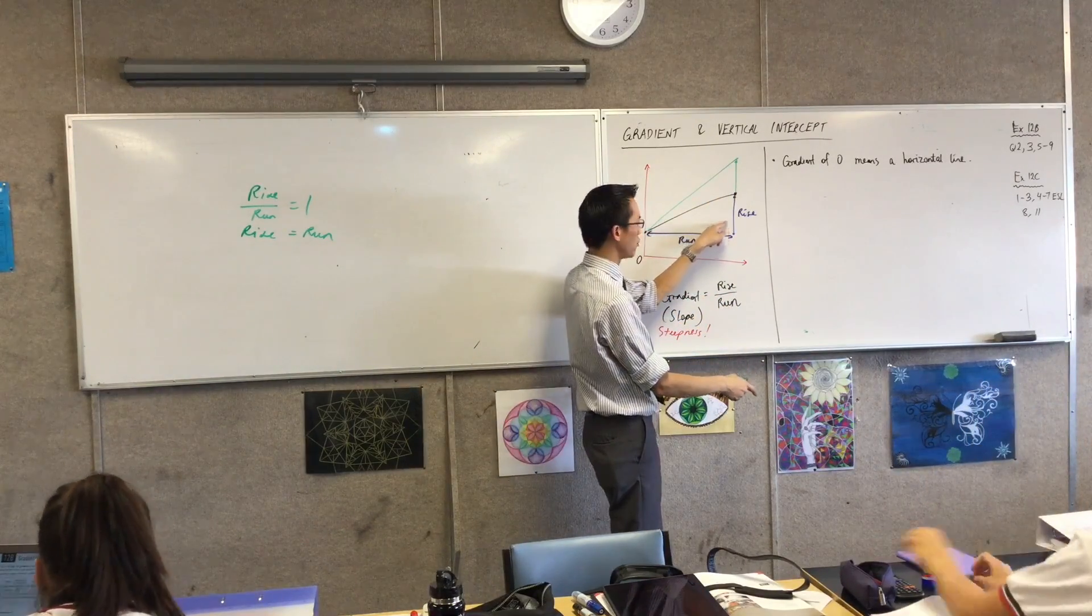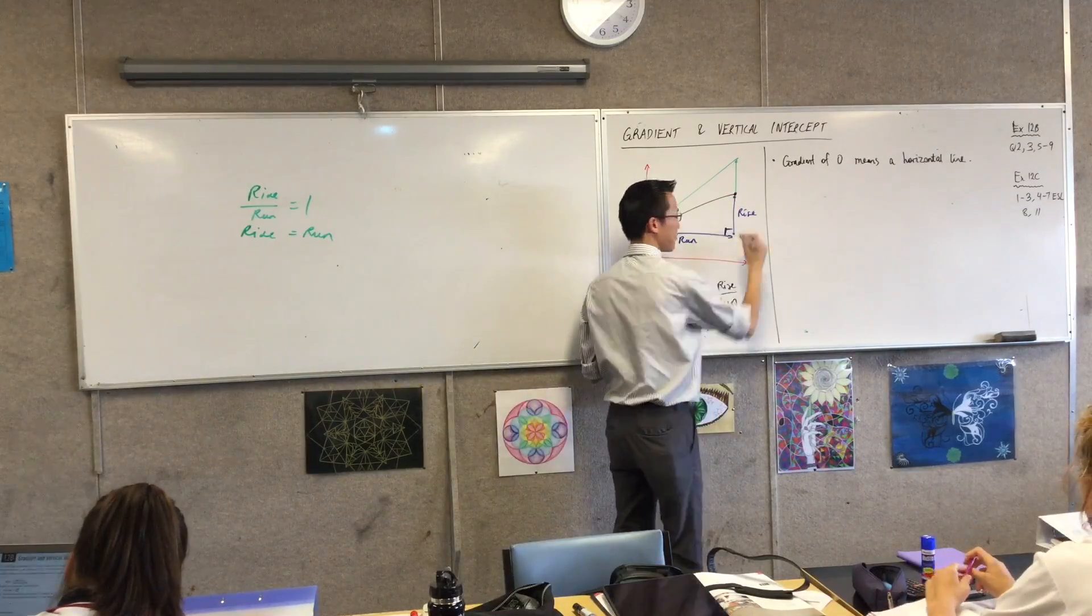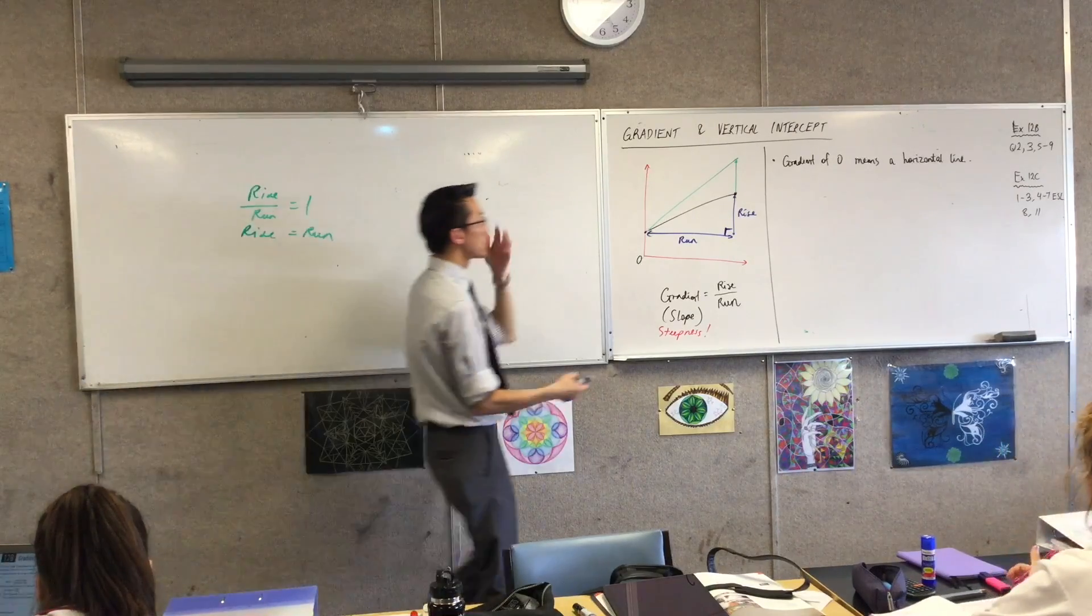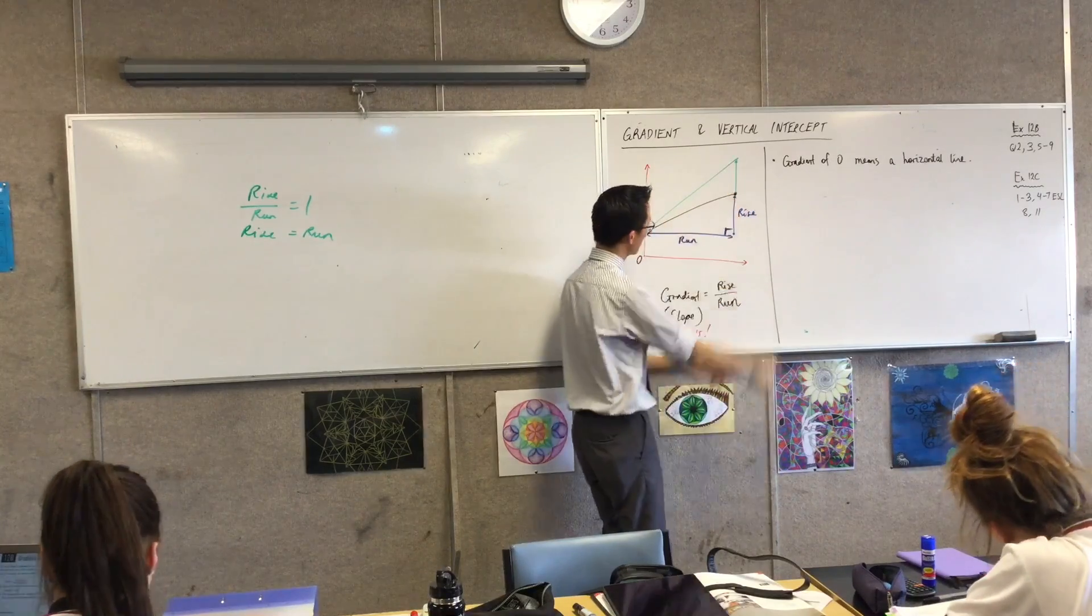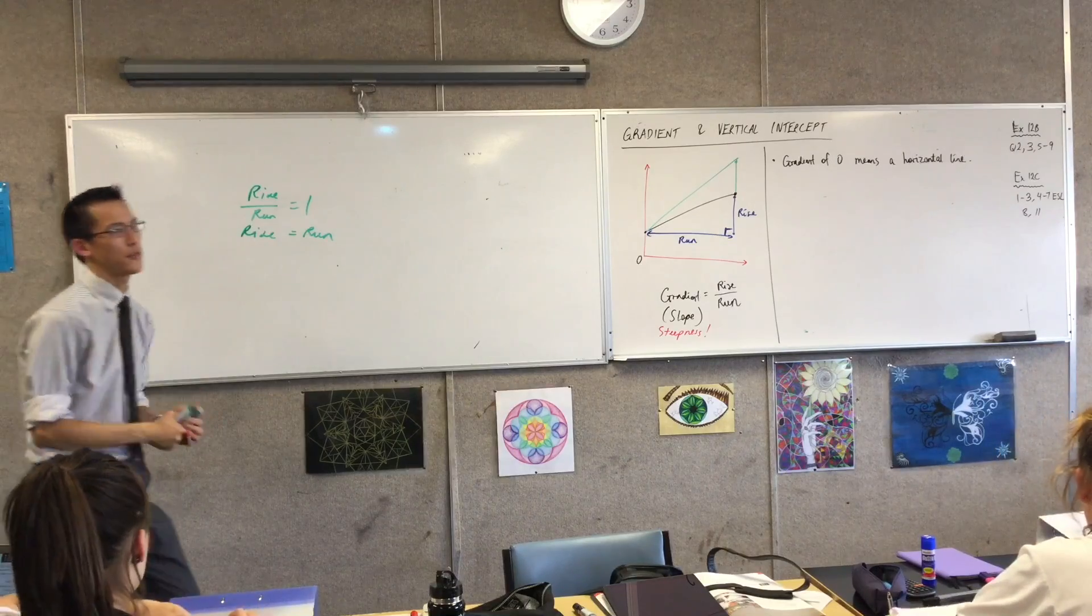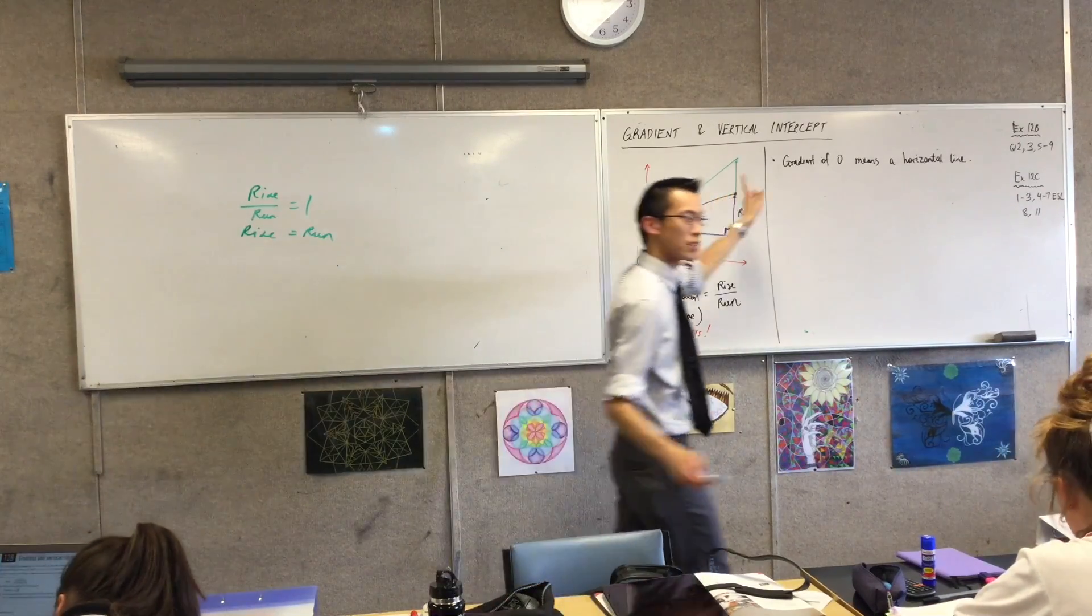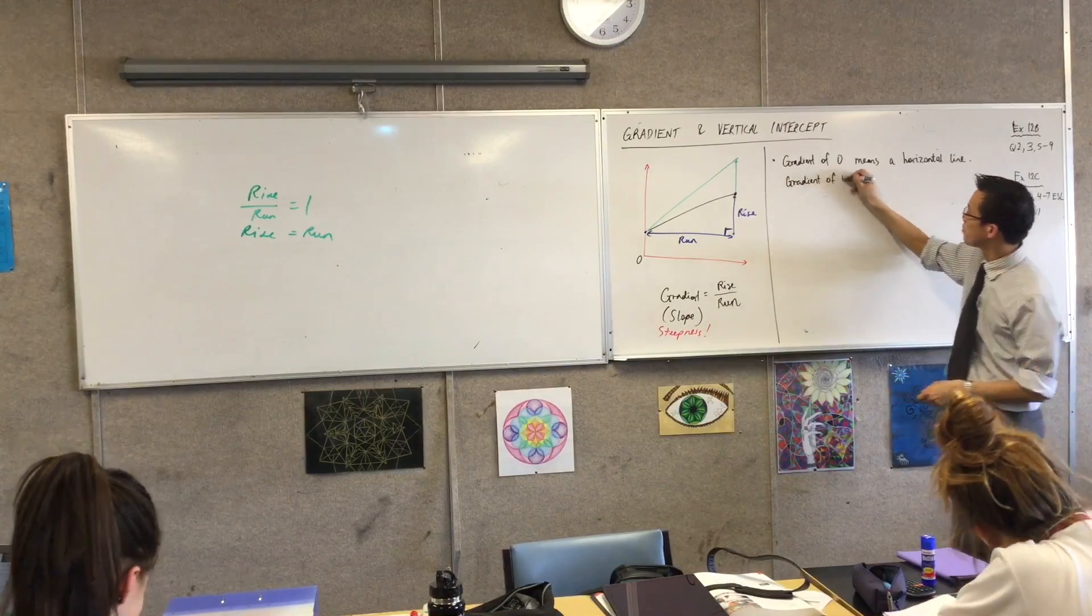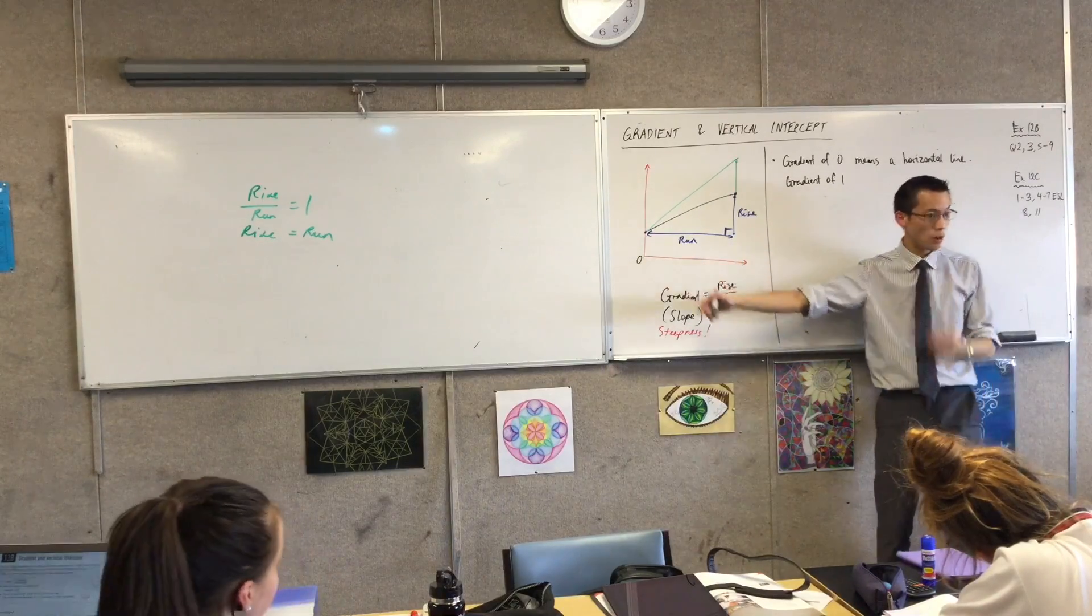This side is the same as this side. What's this angle look like to you? This is a right angle, isn't it? It's an isosceles triangle, so these other two angles over here have to be the same as well. Sides are the same, angles are the same. That's 90. What are those two angles going to be? 45. They're both 45. So a gradient of one means a line that's 45 degrees from the horizontal.